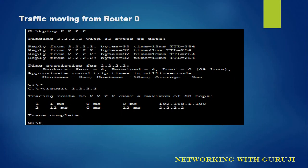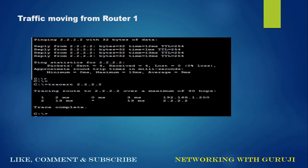Now when Router 0 is working as the active router, we can see we are able to ping 2.2.2.2, which is the IP address in Router 2. If we do a trace, we can see our first hop is dot 100, which is the IP address of Router 0. Now when our active router goes down, our traffic will keep moving. We can see we are still able to ping the same IP address, but now the path has changed — it is now moving through Router 1, as planned.